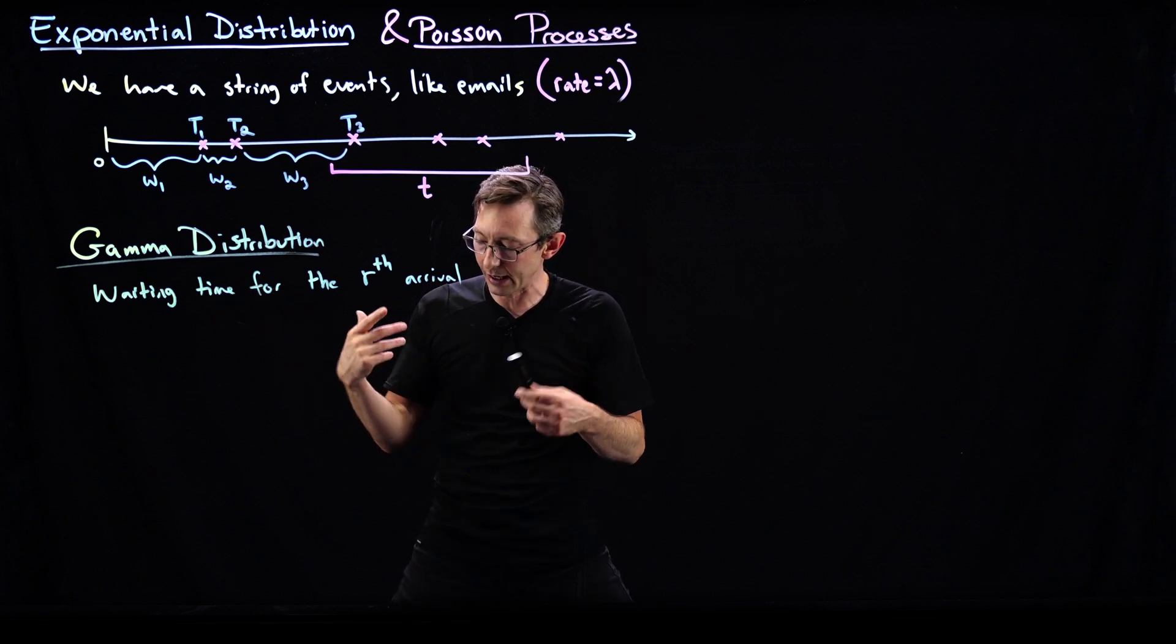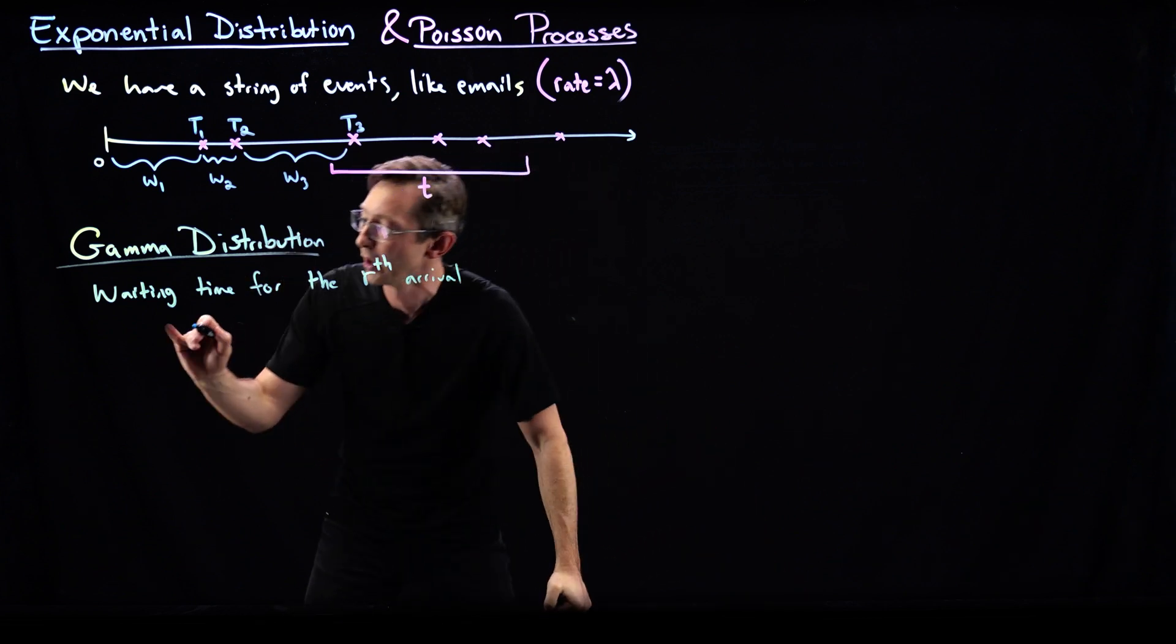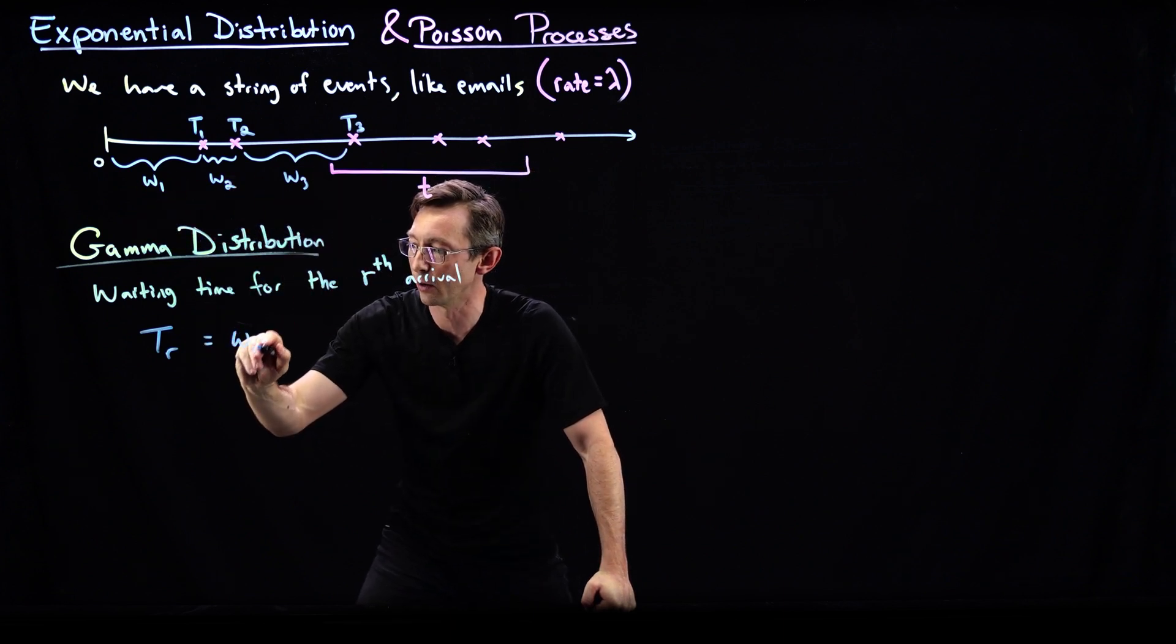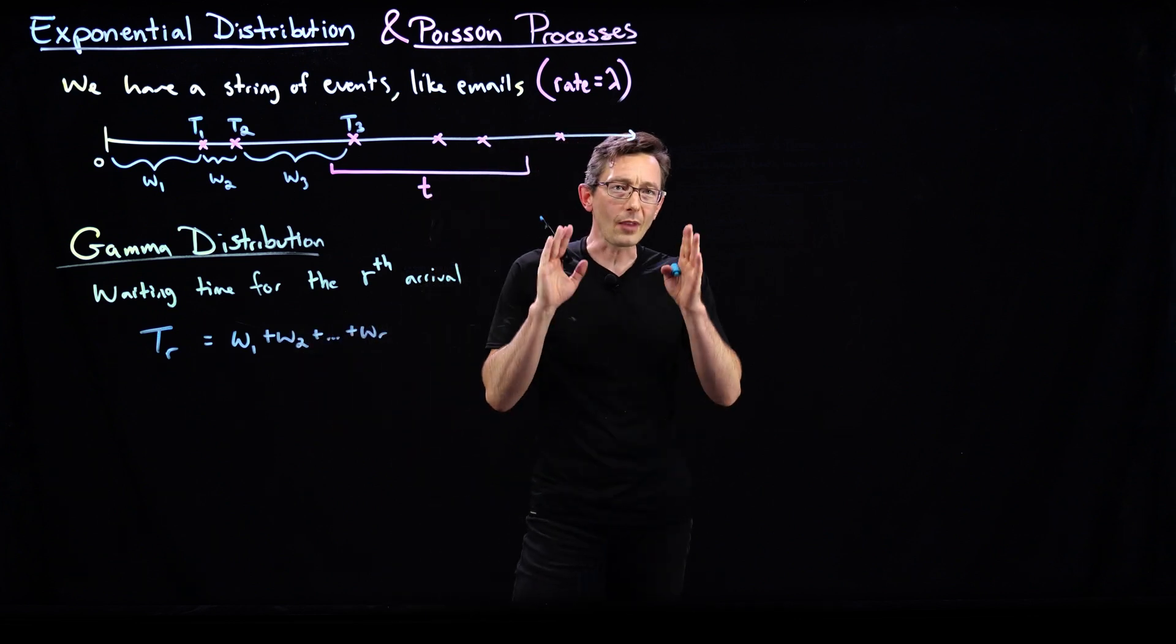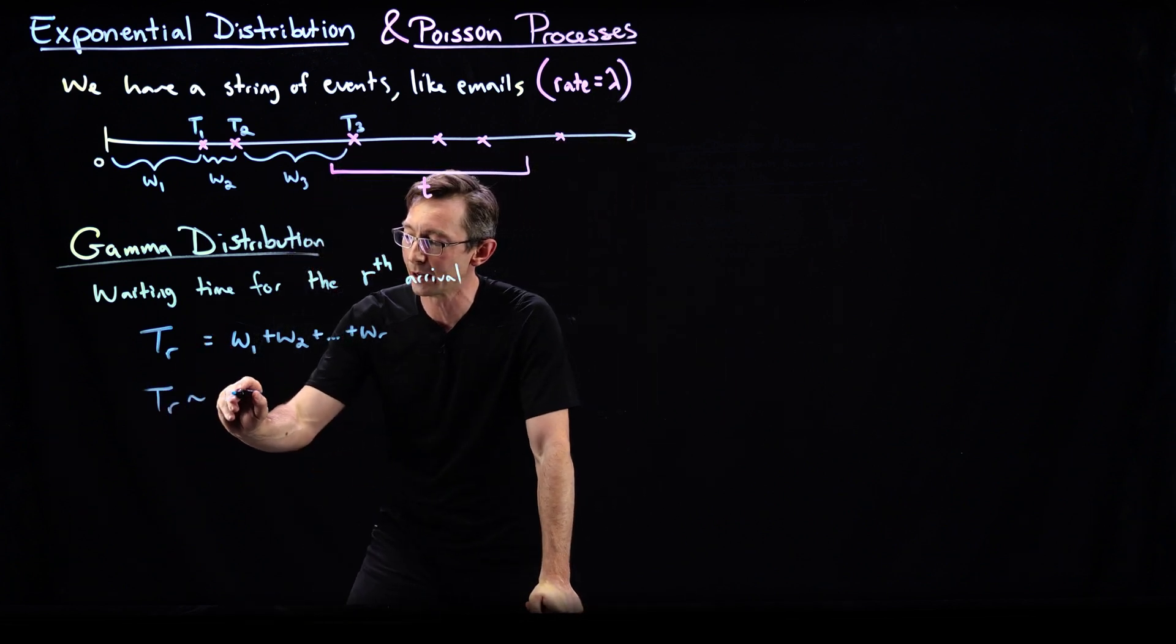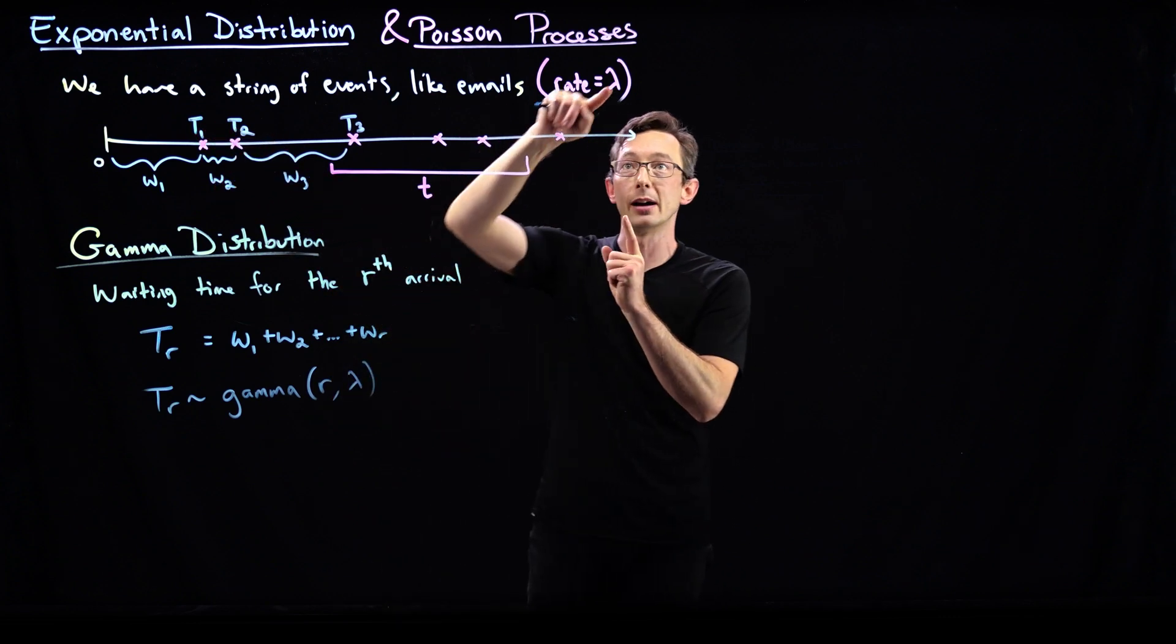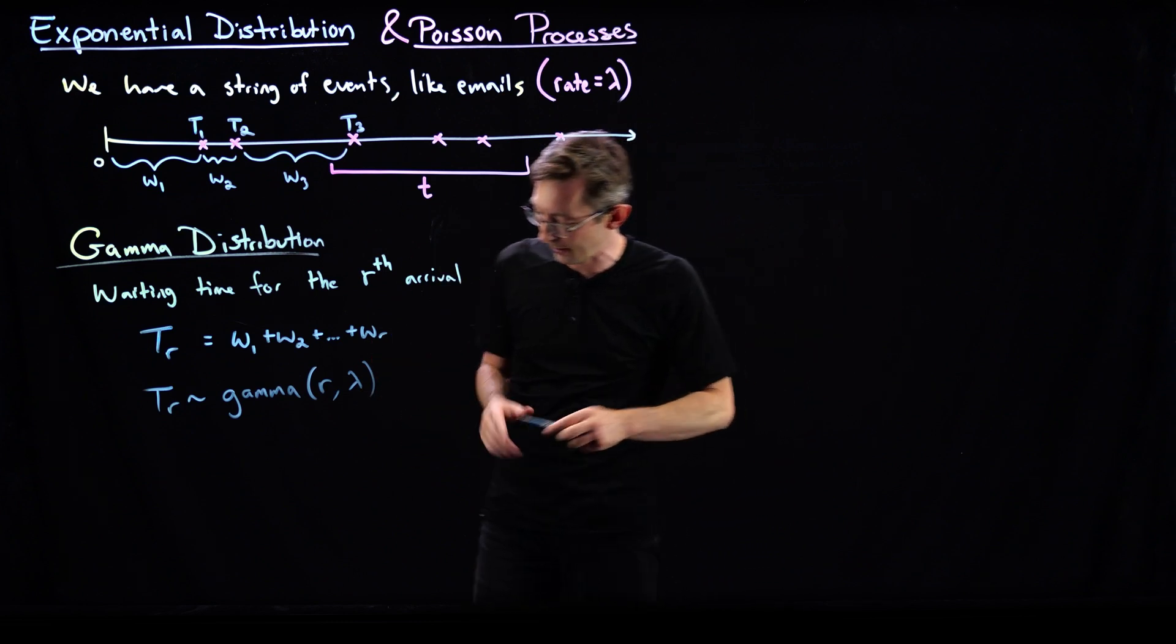So we have this variable t, and I'm going to call it, maybe I'll do it in blue because this is a waiting time. So this Tr, the amount of time I have to wait for my rth email arrival, is going to be the sum of r waiting times. It's going to be omega 1 plus w2 plus dot dot dot plus wr. And we are going to say that this random variable Tr is distributed according to the gamma distribution, gamma of r, lambda. So this has two parameters. The exponential distribution just had one parameter, lambda. Gamma has two parameters: lambda and the number of events I want to be waiting for. Pretty simple idea.